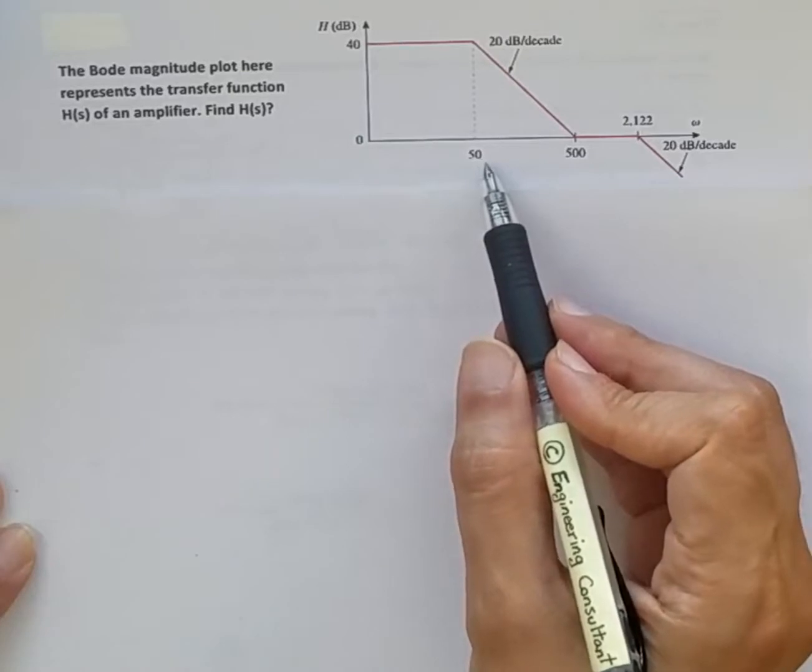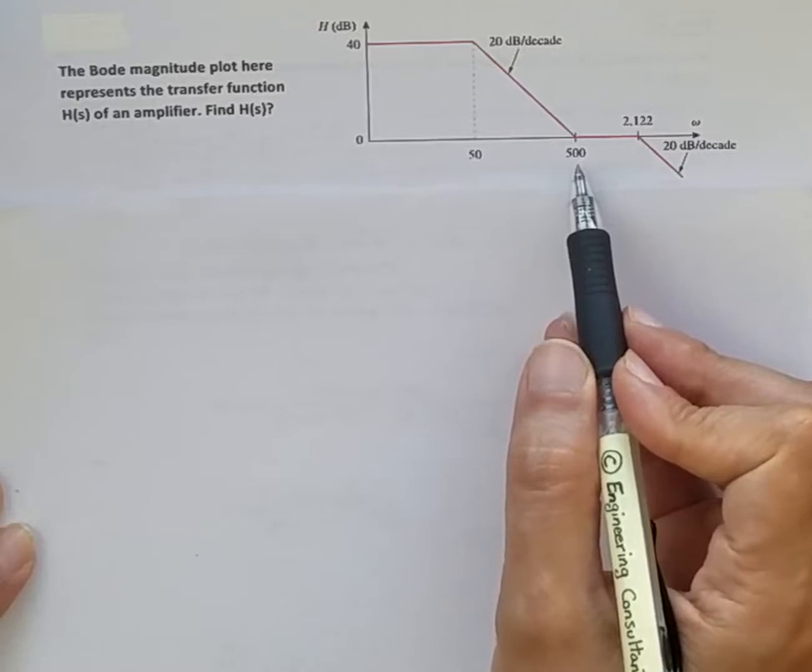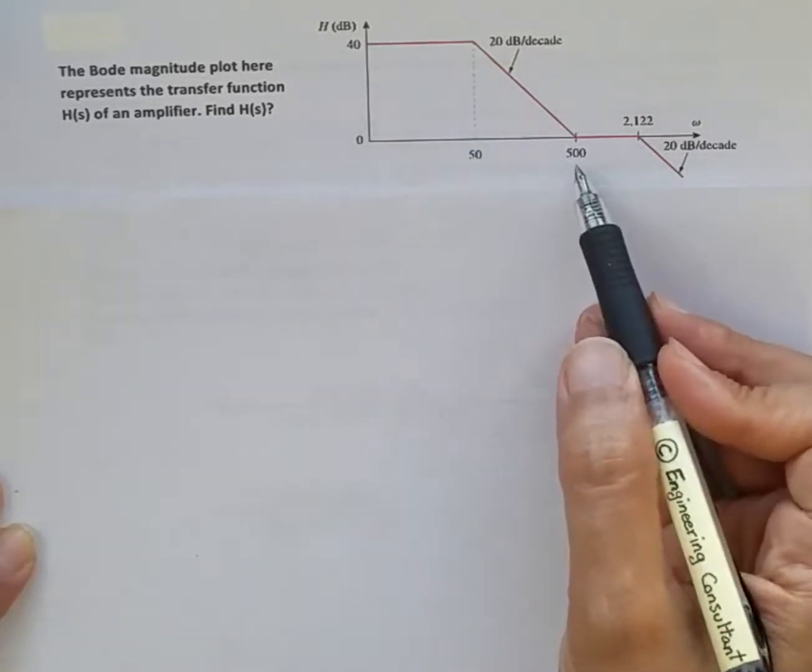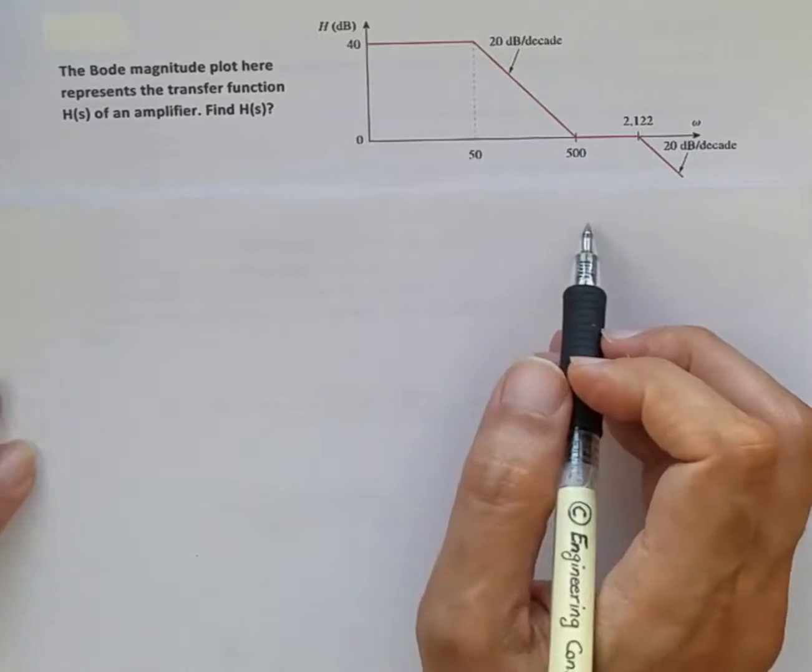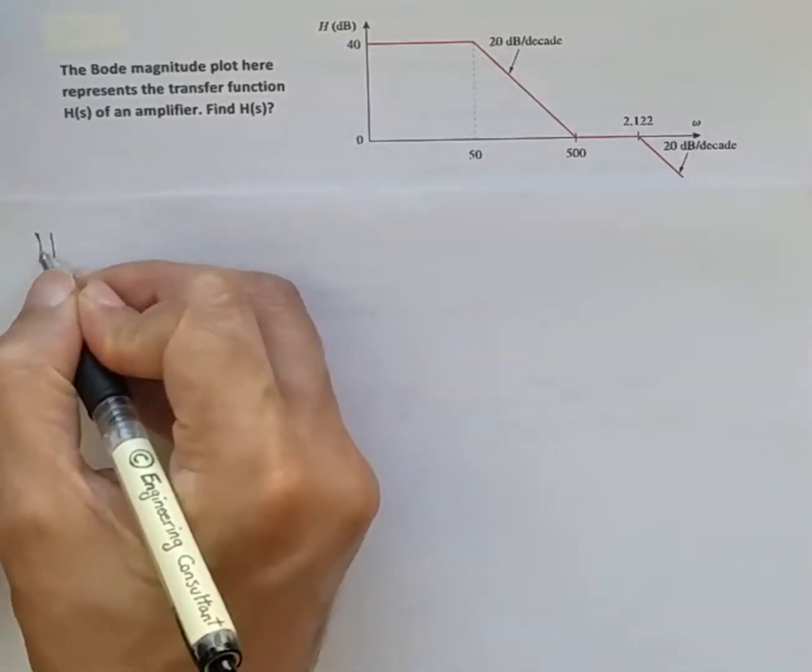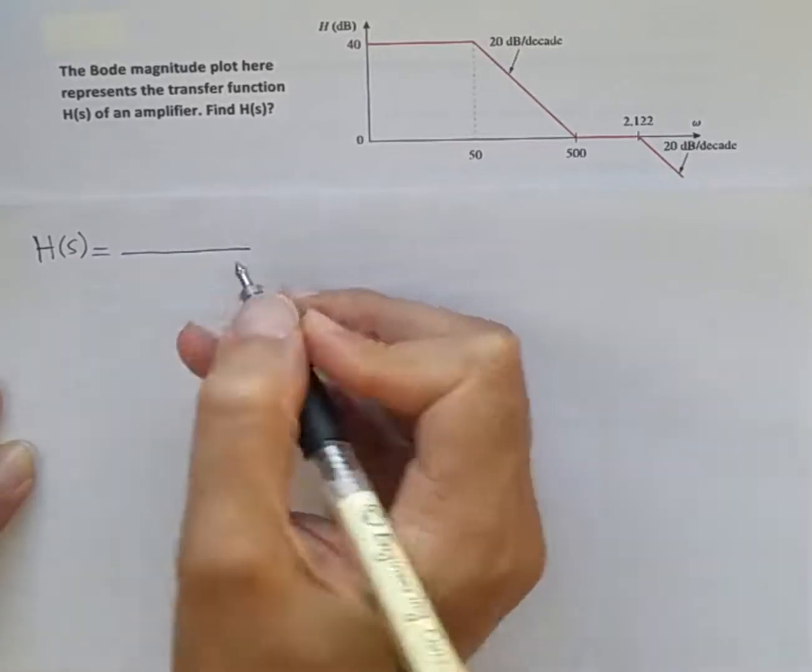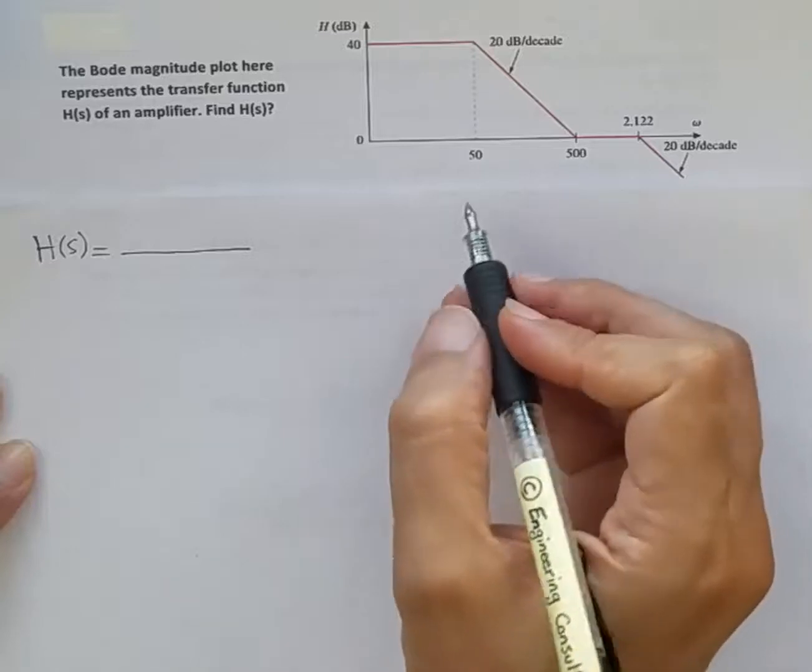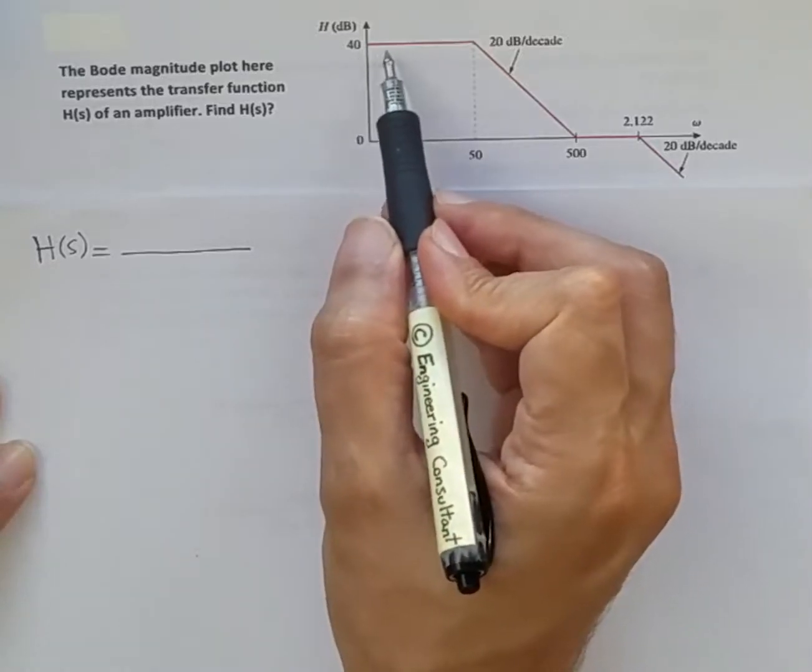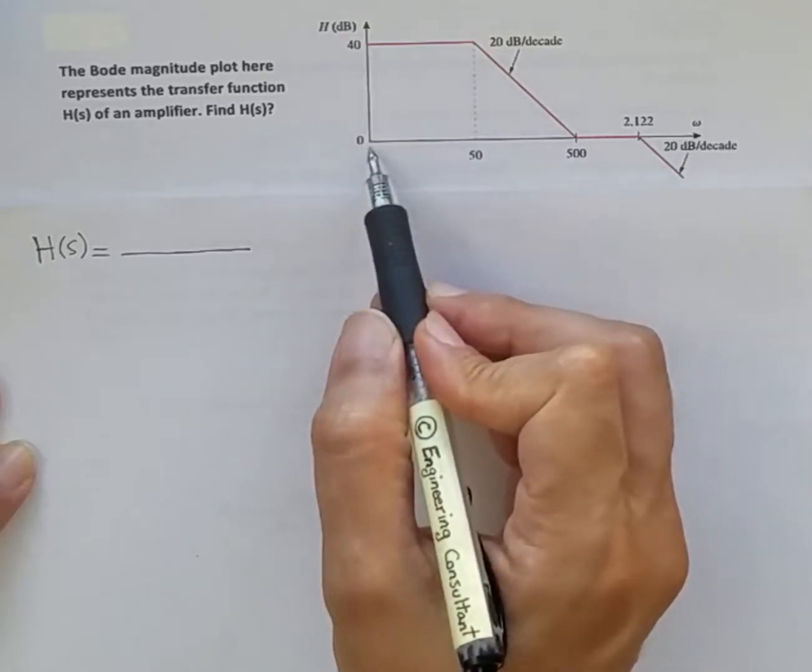As we get above 40 radians per second, especially when we get above 500, we can see attenuation of at least 40 dB. In this scenario, the filter H(s) is represented by some numerator and a denominator. Looking at the magnitude response, from 0 to 50 radians per second there is no change in magnitude—it's constant at 40 dB.